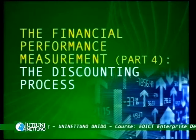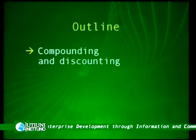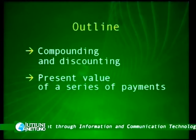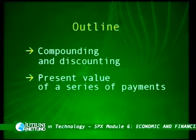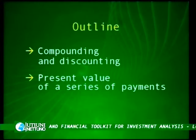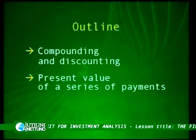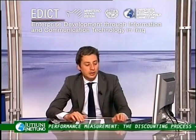Welcome to this new class about financial performance measurement. In this class in particular we'll look at the discounting process. This is part four of the classes on financial performance measurement. As in the previous class we analysed the concept of time value, now we'll see from a formal point of view how time value is applied for operations like compounding and discounting. We'll also see how to use the concept of time value of money to calculate the price and value of a series of payments, getting closer to the dynamic indicators used to appraise the value of a project.